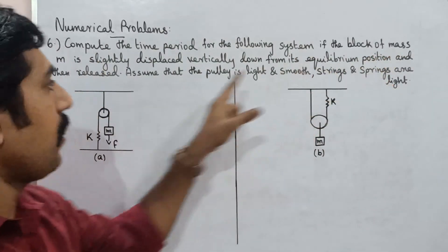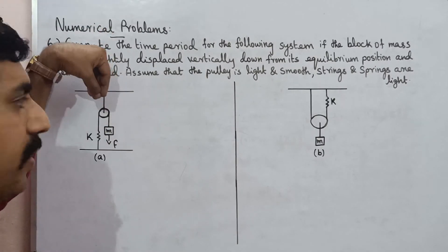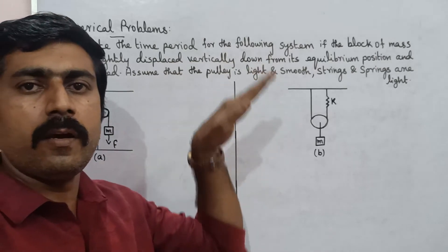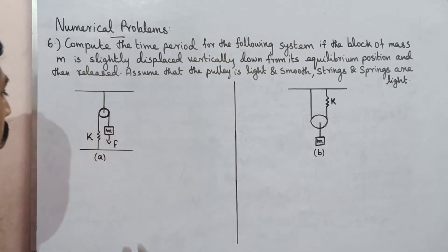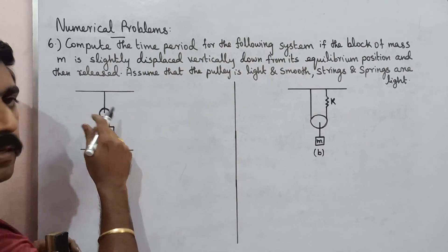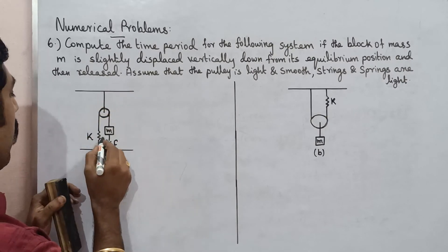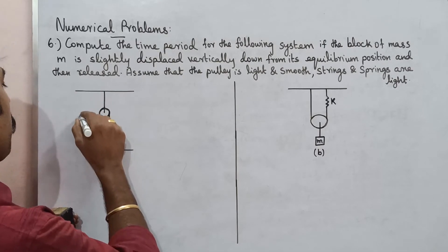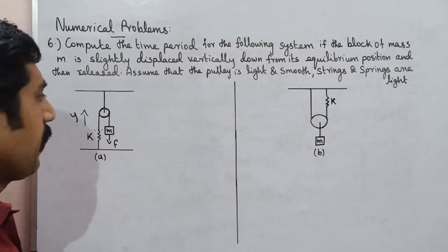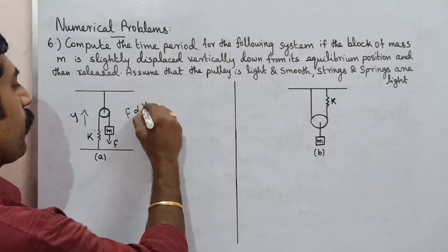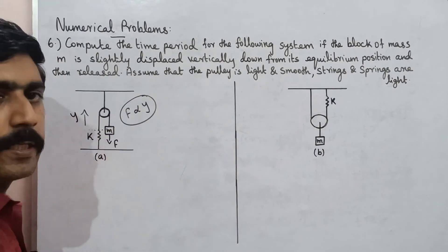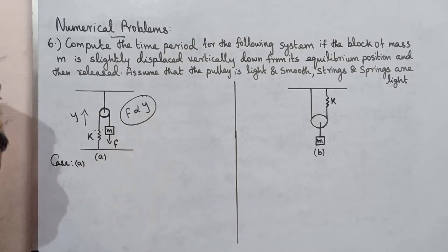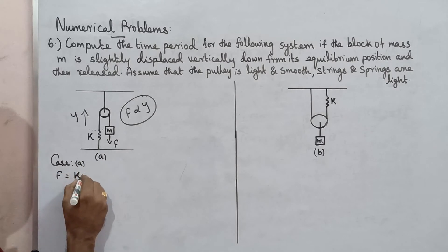If the block of mass m is slightly displaced vertically down, it is displaced. Then it is released, and it vibrates and oscillates. This oscillation is simple harmonic motion. If we apply force F at the end of the spring, the system is totally displaced from the initial position. The displacement is Y, and the entire force equals the displacement.